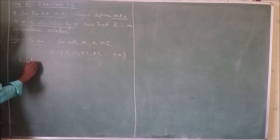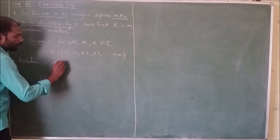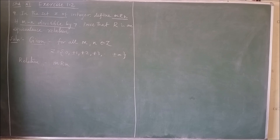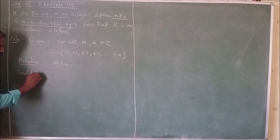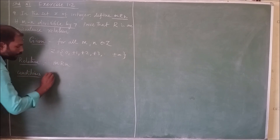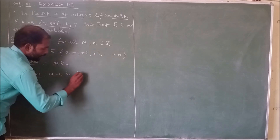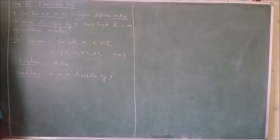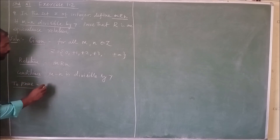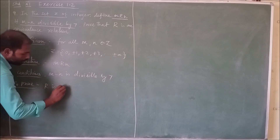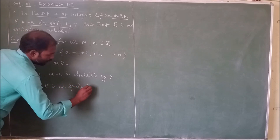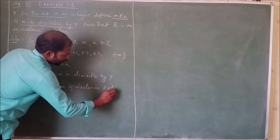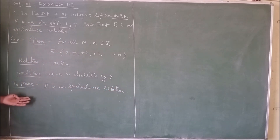The relation is m related to n. The condition is: m minus n is divisible by 7. To prove: R is an equivalence relation.